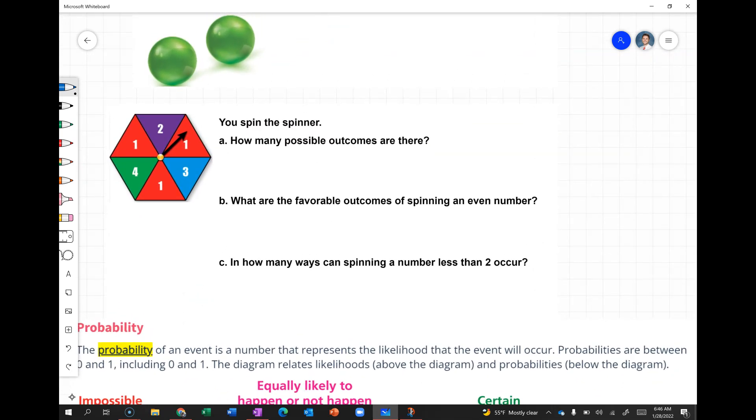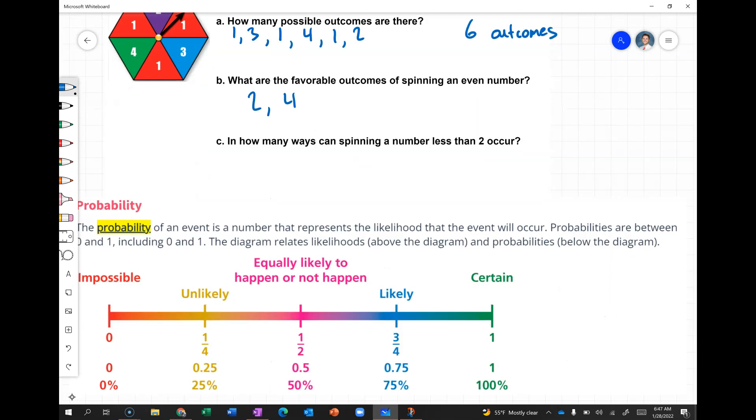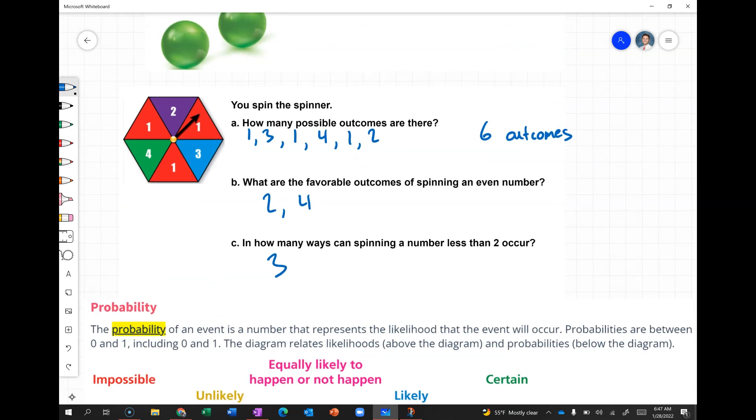Let's look at this example of spinning a spinner. First, how many possible outcomes are there? This spinner could land on six different things: one, three, another one, four, another one, and two. What are the favorable outcomes of spinning an even number? There are two even numbers: two and four. So there are two possible favorable outcomes. Finally, in how many ways can spinning a number less than two occur? The numbers less than two are one. There are three different ways to spin a number less than two, as each of those ones is its own possible outcome.